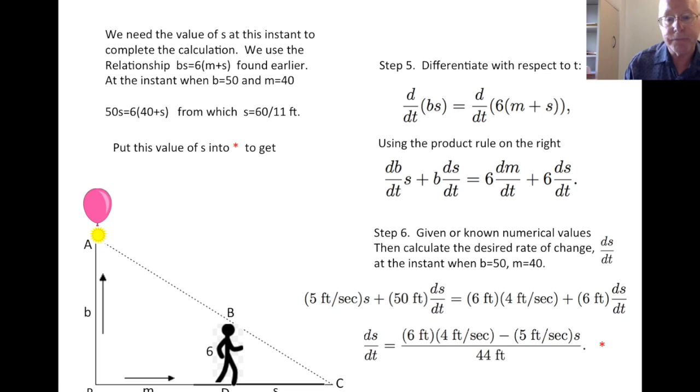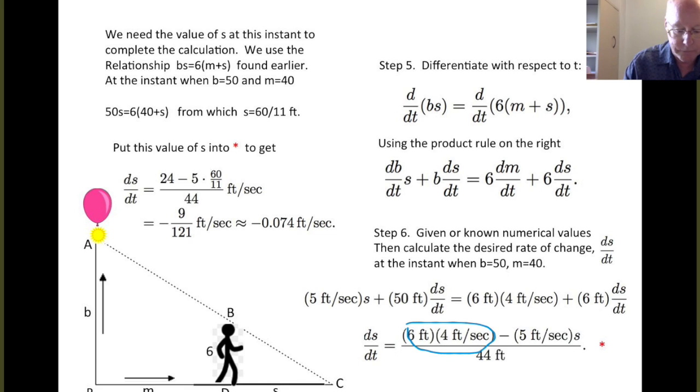So we're going to replace this S value down here by 60 over 11, and finish off the arithmetic. So, we put this value into the equation star, and the red star is going to mark the two things we have to look at. And with that arithmetic, here's what happens. The 6 times 4 gives 24. So that calculation gives that 24. We see the 5 times S over here. S is the 60/11 divided by 44. We've taken care of the units here now, and factored out feet per second behind, and then the other feet units from the 6, 44, and the S, which is in feet, cancel. So we do get the correct units of feet per second. The arithmetic gives us minus 9 over 121 feet per second, which is about minus 0.074 feet per second. And so that's the rate of change of the shadow.